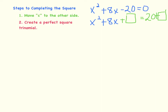Step number 2 is to create a perfect square trinomial. We do that by taking the b term, which is 8, and dividing it by 2. 8 divided by 2 is 4. And so then we will square 4 — 4 squared is 16. So that is what will go in each box; we're going to be adding 16 to each side of the equation.